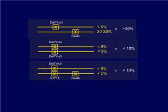These two mutations are said to be in cis when they are on the same chromosome. The net result is that these two mutations act like severe mutations.